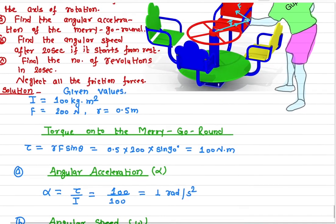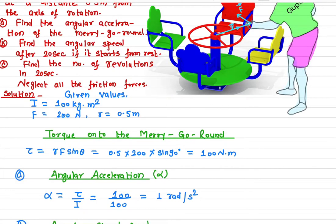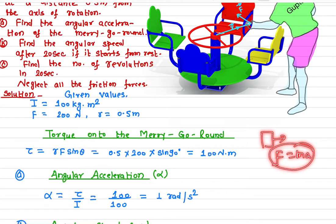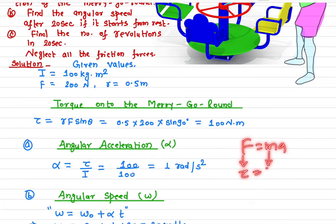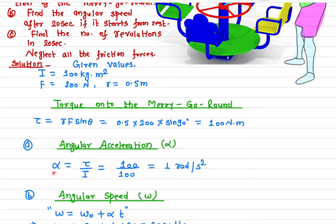Now, if a father is applying this force, what is the angular acceleration? In linear motion, when we apply a force onto an object there is an acceleration given by F = ma. The same thing happens in rotational dynamics: force is replaced by torque, mass is replaced by moment of inertia, and linear acceleration is replaced by angular acceleration.